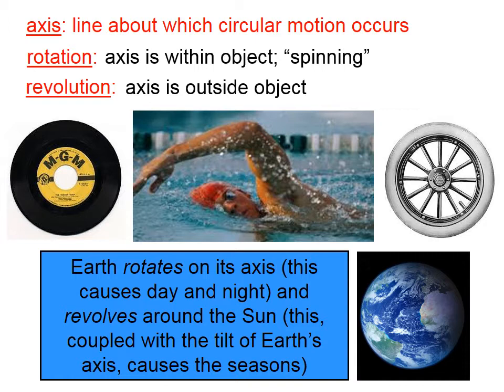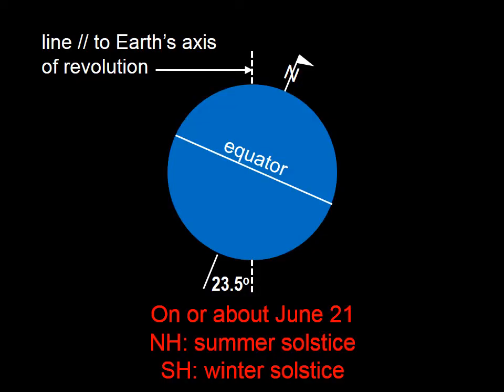And this, coupled with the tilt of Earth's axis, causes the seasons. The axis of the Earth is within the Earth, which is why we say that the Earth rotates on its axis. But when the Earth goes around the Sun, you can imagine an axis going through the Sun and the Earth spinning around. In that case, the Earth is outside of the axis, and we call that sort of circular motion revolution — the Earth revolves around the Sun.